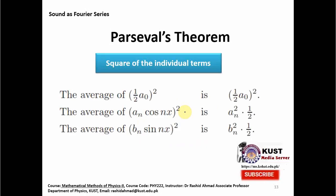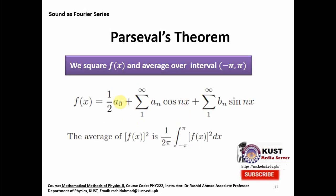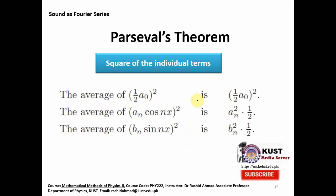When we square and then take the average, there will be an infinite number of terms. We can look at the character of these terms in three categories: the average of (½·a₀)² equals ½·a₀²; the average of the cosine terms gives an²·(½), because the average of cos² terms equals ½; and similarly the average of bn·sin(nx) squared gives bn²·(½). These are the three categories of terms and their averages.